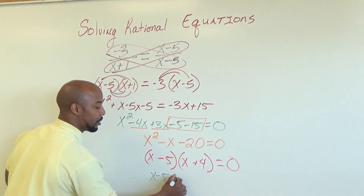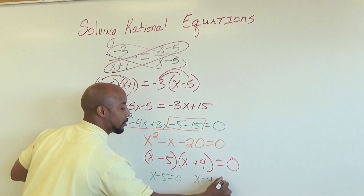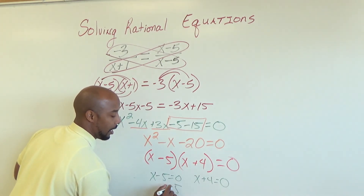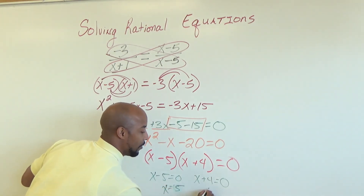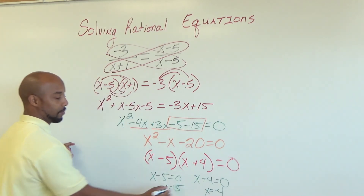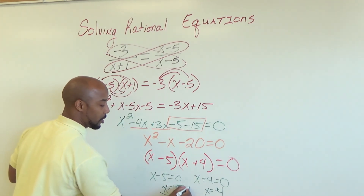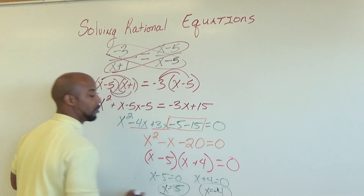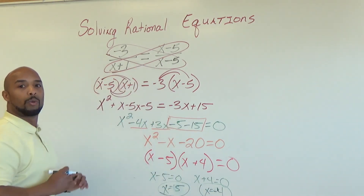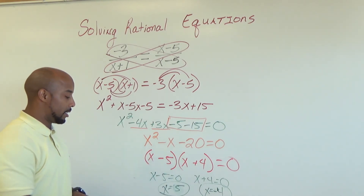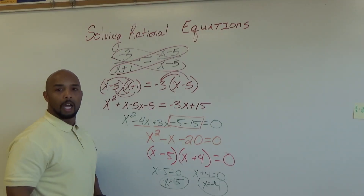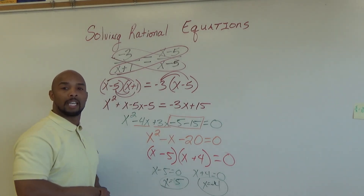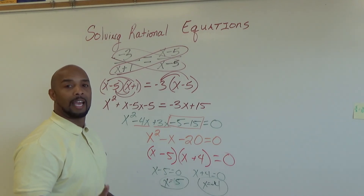So we have x minus 5 equals 0 and x plus 4 equals 0. Solving these gives x equals positive 5 and x equals negative 4. Notice we have two solutions. When you have two solutions, I strongly suggest that you go back and substitute both solutions into your original equation to check whether one of them is an extraneous solution.